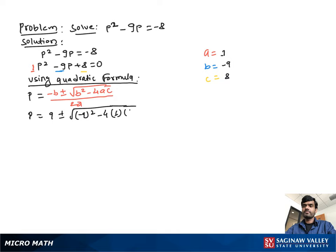4 times 1 times 8) over 2 times 1. Then p = 9 ± √(81 - 32) over 2.